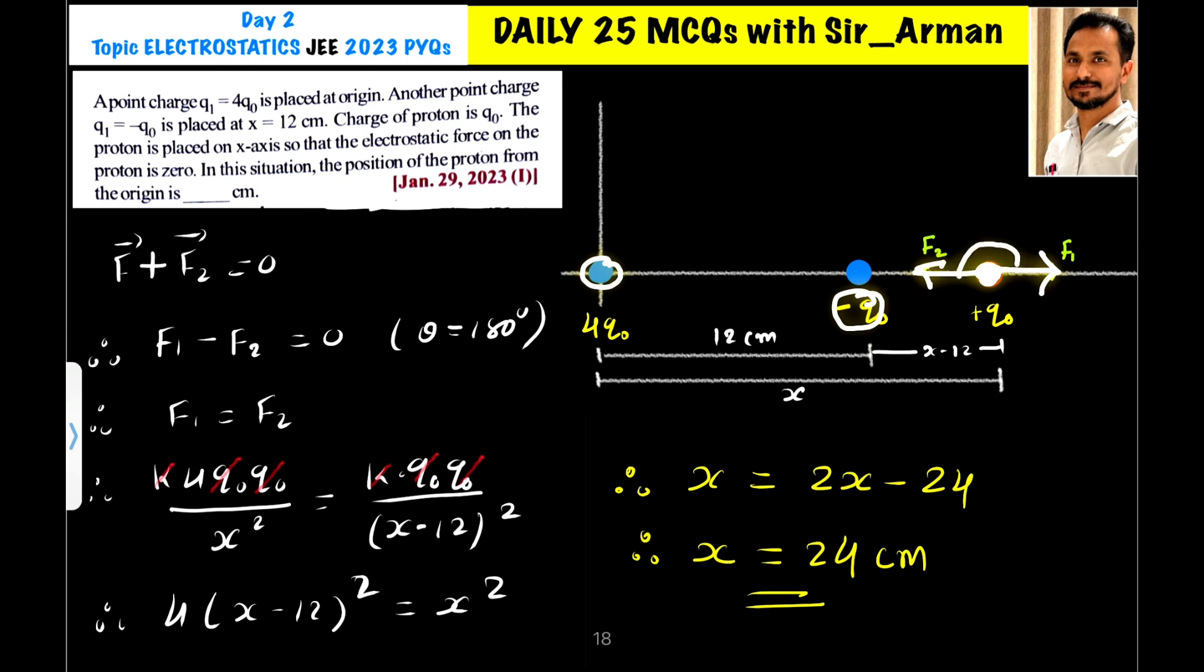Both forces are in opposite directions and hence they may cancel each other. Let us assume we place this proton at distance x from the origin. What is the distance of the proton from this charge? The total distance is x and this distance is 12 centimeters.